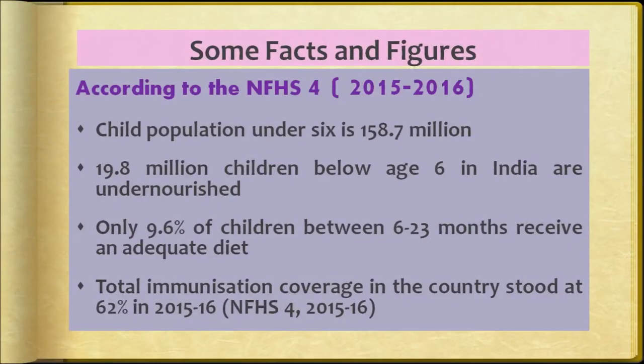Let us study the situation of children in India. There is a lot of disparity — some people live in small homes, some in big homes, some in congested areas, some in very open spaces — with significant economic variation. According to the National Family Health Survey (NFHS-4) set up by the government, the child population under 6 is 158.7 million. Of these, 19.8 million children below age 6 in India are undernourished.